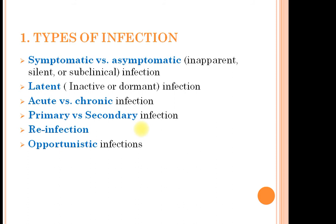Opportunistic infections are caused by less harmful pathogens or pathogens which are present in the host body as normal microflora. They are looking for an opportunity in the form of weakening of the host immune response, stress conditions, hormonal imbalance, or certain antibiotic or steroid therapy. A common example is the Candida infection in the case of AIDS patients.